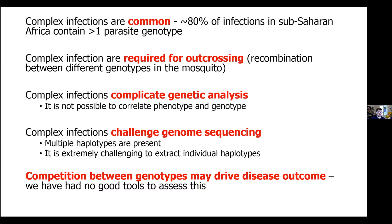Complex infections make genetic analysis incredibly challenging. It's not really possible to understand which phenotype goes with which genotype within an infection when you have a mixture of different genotypes. It's very difficult, based on genome sequencing alone, to understand the genome sequence of any individual parasite within an infection. There is also some evidence that competition between different parasite genotypes may drive the outcome of an infection, but this has predominantly only been observed in mouse malaria and we haven't had the tools to explore this in detail in human infections.